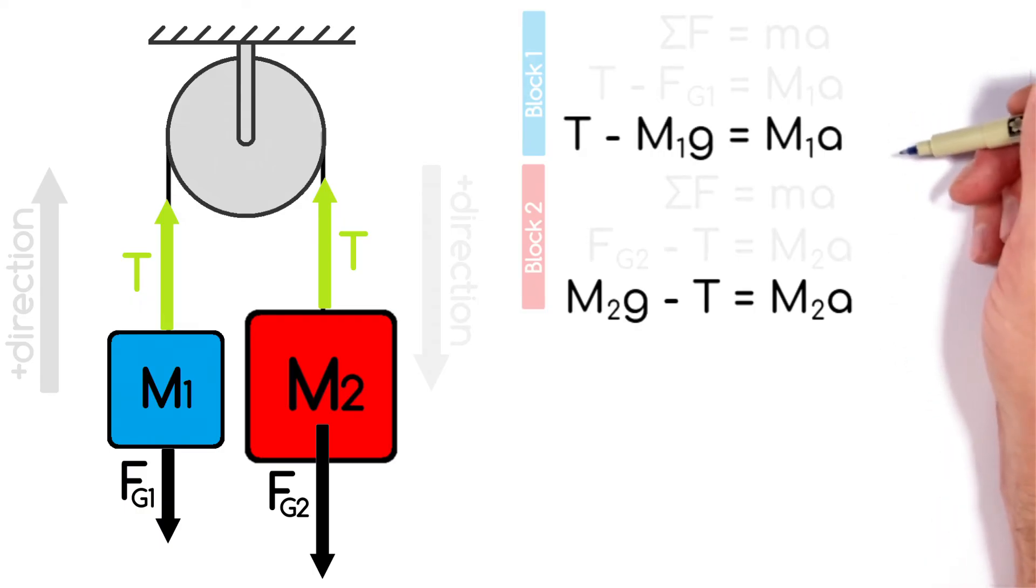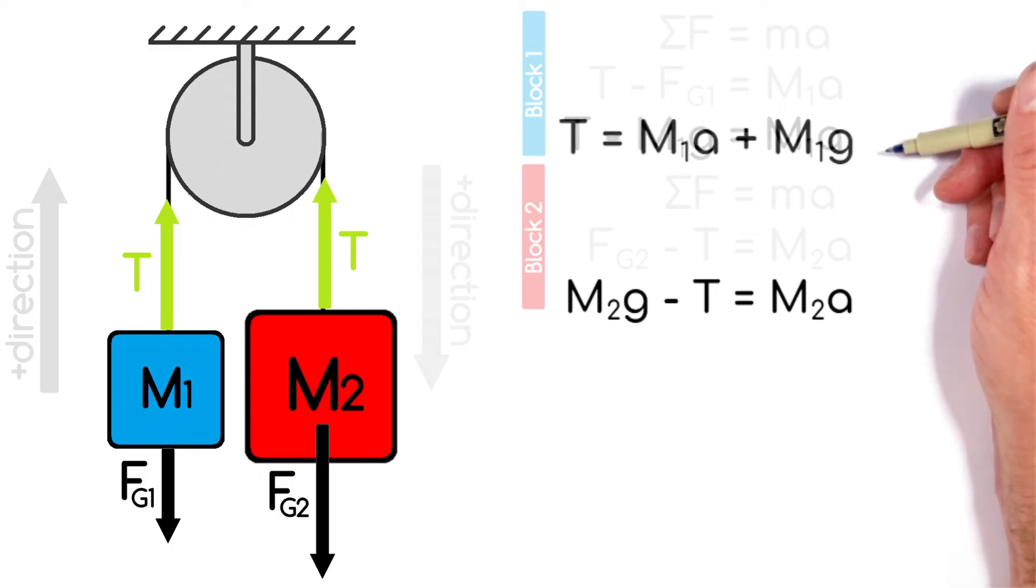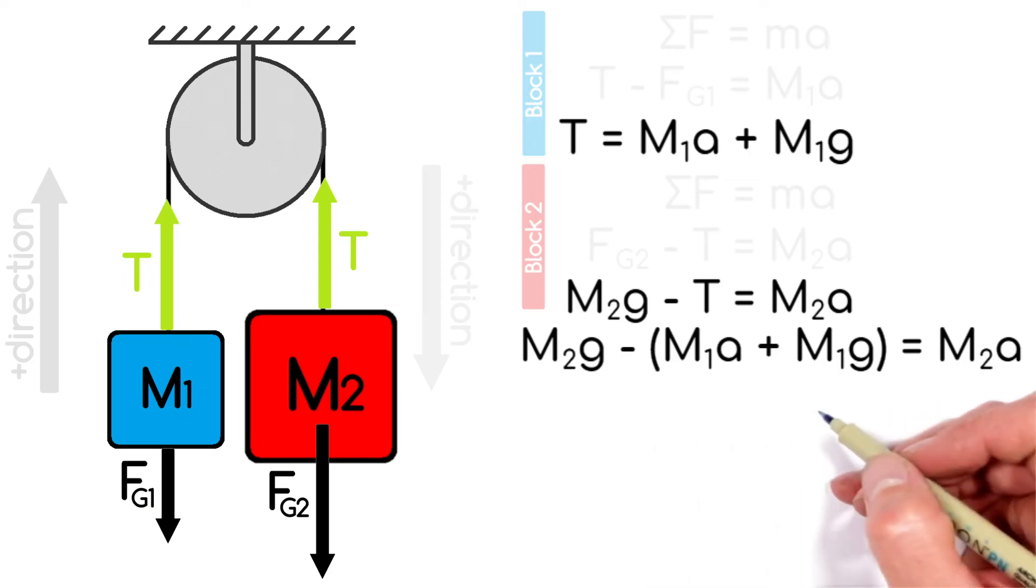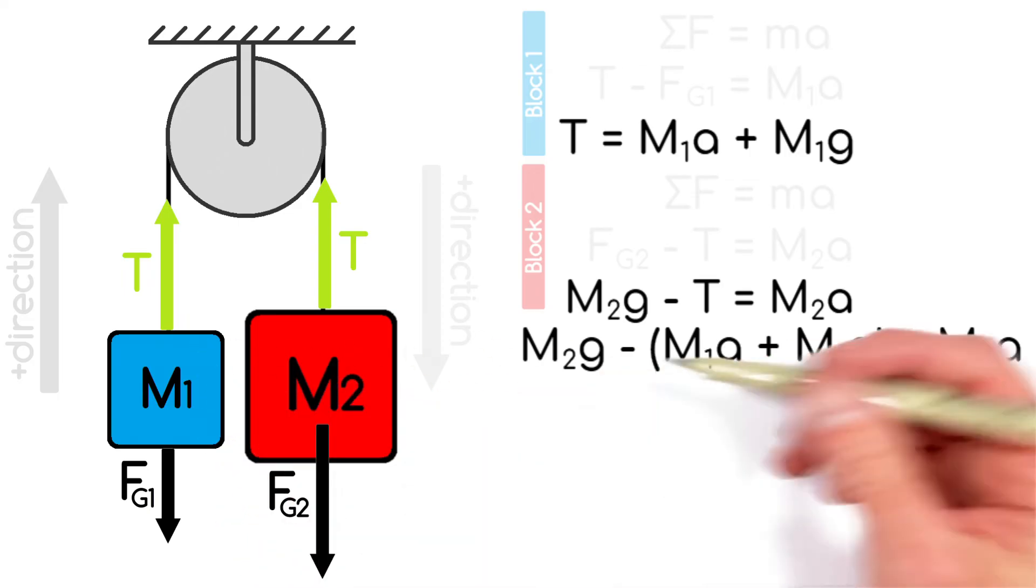So rearranging this first equation for the tension, then substituting that equation in down here, we have an equation that relates the motion of these two blocks to one another.